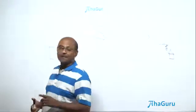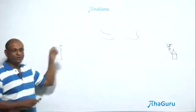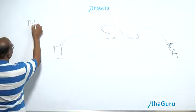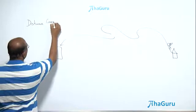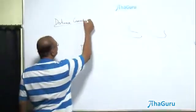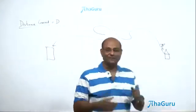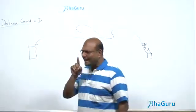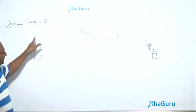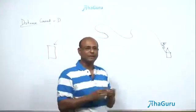What is the distance he's travelled? If you look at the curved path, that total length is called the distance covered. We use the term 'distance covered' or 'distance travelled.' We'll usually use the letter D, or sometimes L. D means distance and L stands for the length of the entire path — the path length — and that is the distance covered.